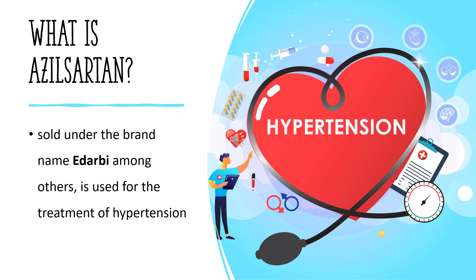The most common adverse reaction in adults is diarrhea. It is available as a generic medication. It is also sold as a combination drug with chlorthalidone under the brand name Adarbi Chlor.